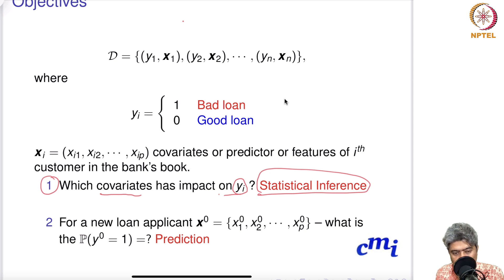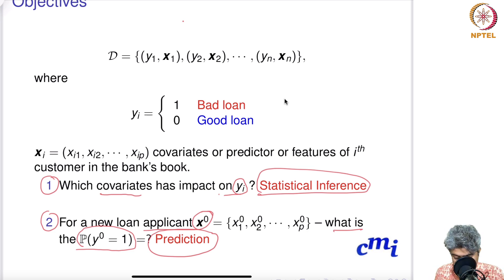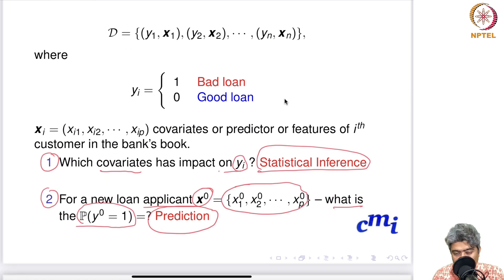The second kind of question is: for a new loan applicant with features x0, what is the probability that y0 = 1 — that is, it's going to be a bad loan? This is a prediction problem. You want to predict the probability that a new customer will default, based on their financial status, tax return statements, education level, and so on. This belongs to the prediction problem.